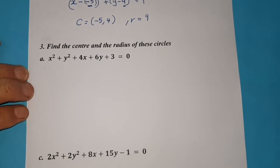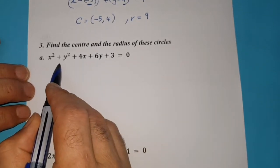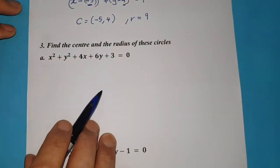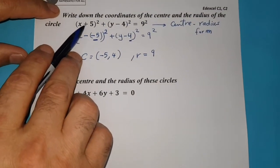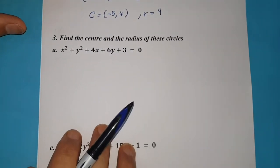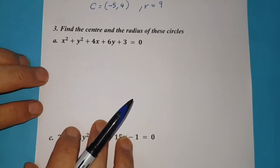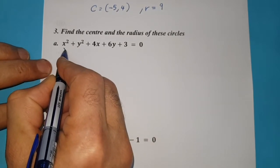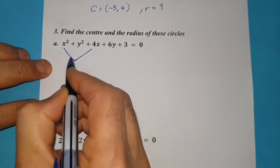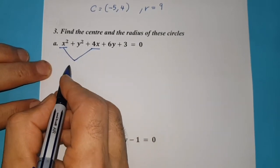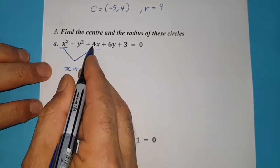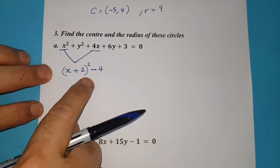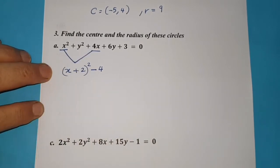Find the center and the radius of this circle. This is the general form of the equation of a circle. I will write this form in the canonical center-radius form by completing the square — I think you studied completing the square in previous algebra lessons. We will complete the square for x squared and 4x. These two terms can be written as (x plus half of 4, which is 2) all squared, minus that number squared, which is 4.